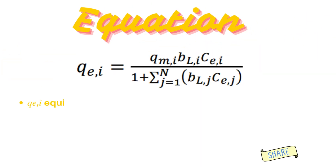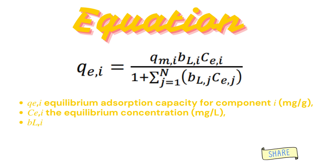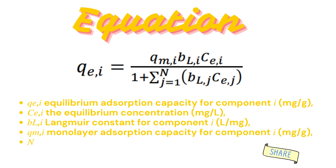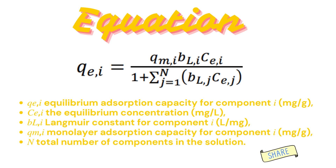Now, the equation for the extended Langmuir model is: Q_Ei equals Q_Mi times B_Li times C_Ei, divided by 1 plus the summation of B_Lj times C_Ej. Where Q_Ei is the equilibrium adsorption capacity for component i, C_i is the equilibrium concentration, B_Li is the Langmuir constant for component i, Q_Mi is the monolayer adsorption capacity for component i, and N is the total number of components in the solution system.